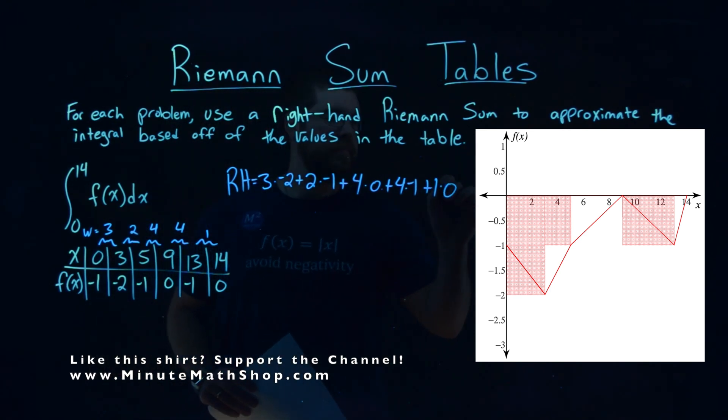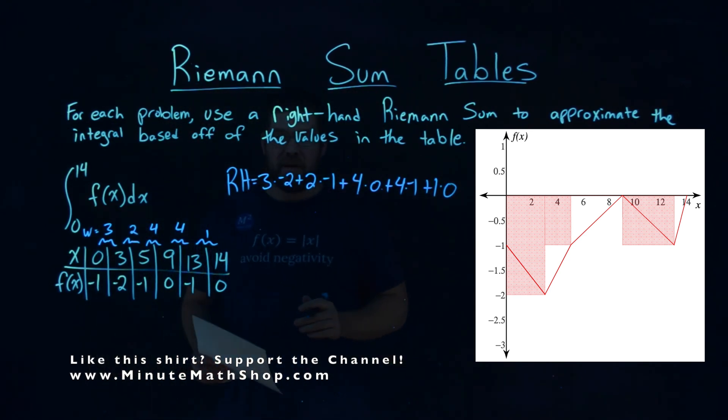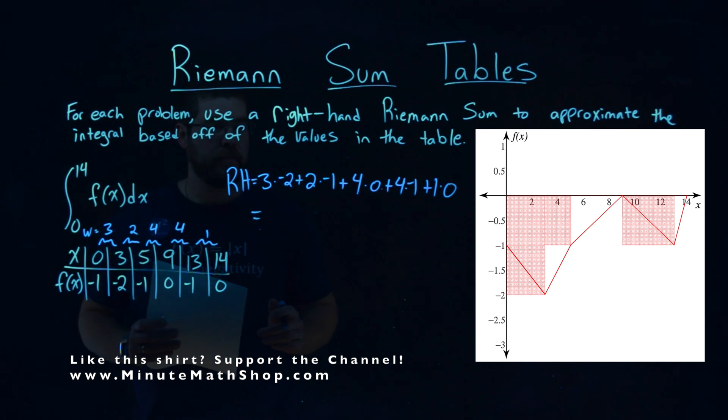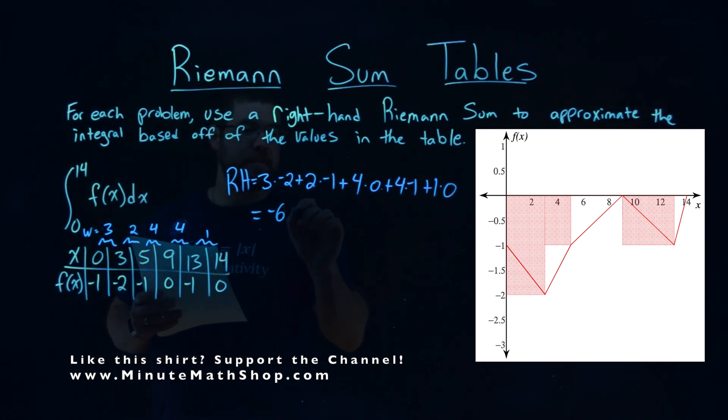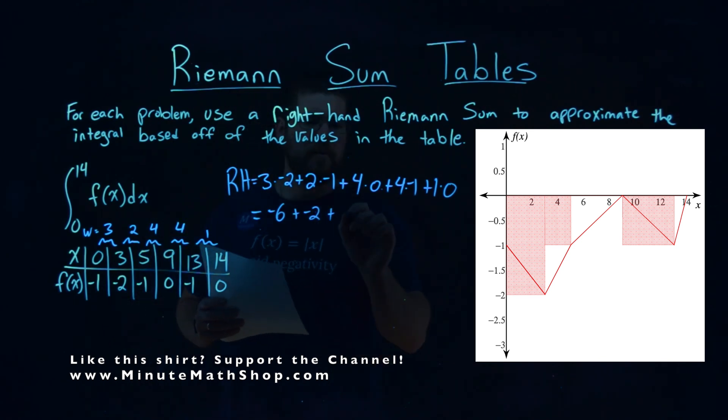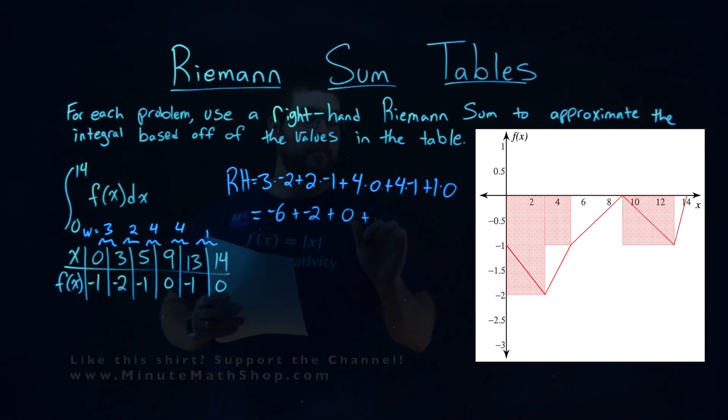All right. So now we just have to simplify this. 3 times negative 2 is negative 6. Plus 2 times negative 1, negative 2. 4 times 0 is 0. 4 times negative 1, negative 4. And 1 times 0, 0.